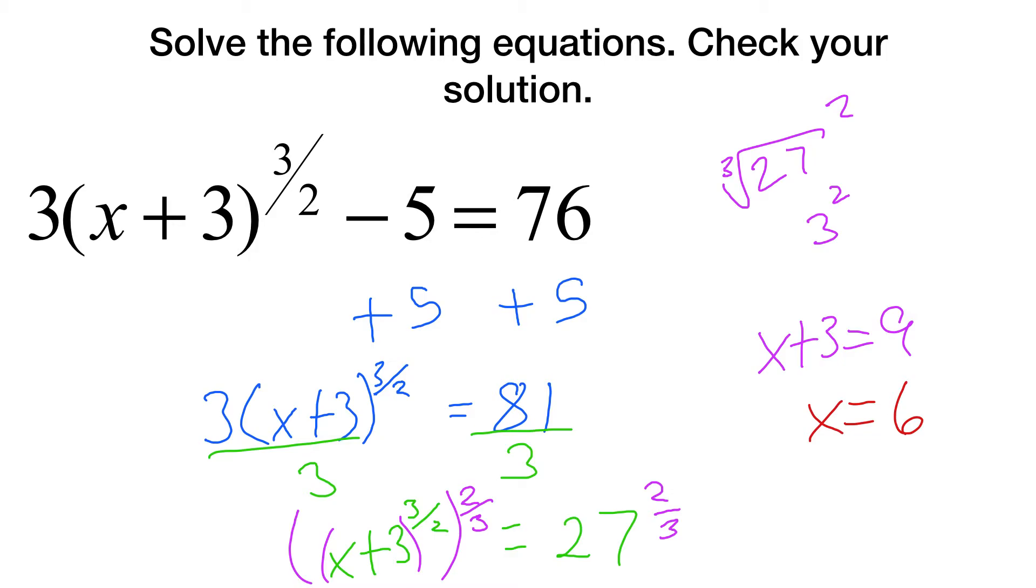So let's see. 3 times 6 plus 3 is 9. Square root of 9 is 3. 3 cubed is 27. So 3 times 27 is 81. Minus 5 is 76. Yep, this one works. Yay.